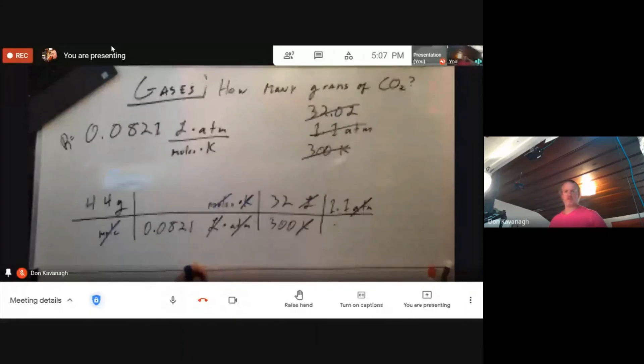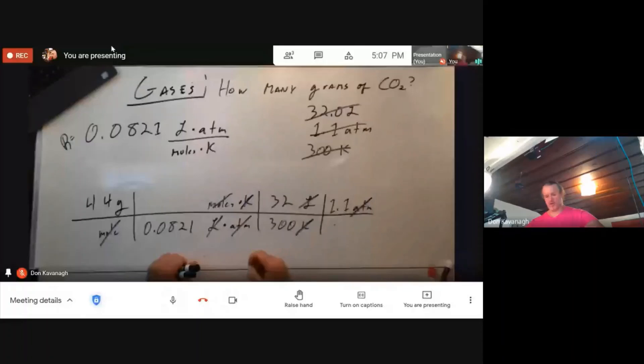But this still fits with our idea of how to do scaffolding where we make every unit cancel until everything in our shopping list is used up and what we're looking for is the only thing left.